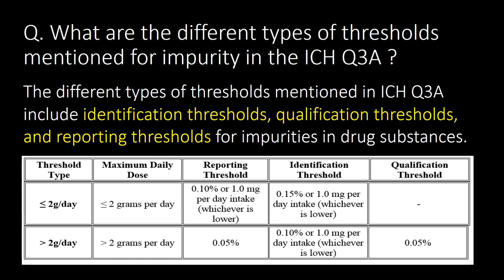What are the different types of thresholds mentioned for impurities in ICH Q3A? The different types of thresholds mentioned in ICH Q3A include identification thresholds, qualification thresholds, and reporting thresholds for impurities in drug substances. You can refer to the table below for understanding the three different types of thresholds for impurities.